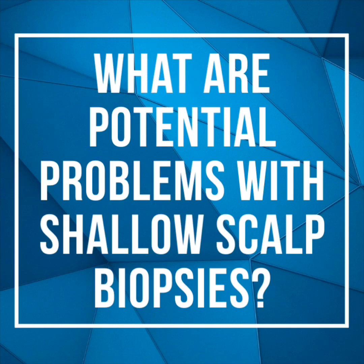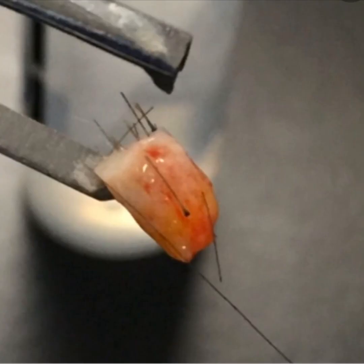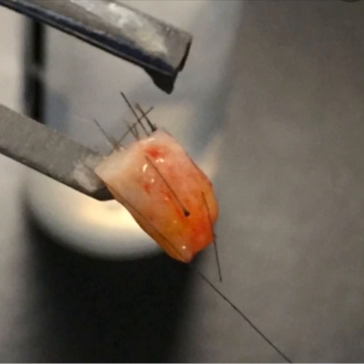Today we'll take a look at what are the implications when a biopsy is too shallow. Here we're looking at a four millimeter punch biopsy that's just come out of the scalp. You'll notice the biopsy extends deeper below the bulb, or the lower portion of the hair follicle. The lower portion is mainly fat — this is the subcutaneous fat — and it's important to sample this area. The biopsy needs to go deep enough so that this portion can be removed in the specimen and sent to the pathologist.